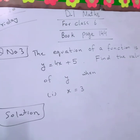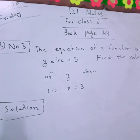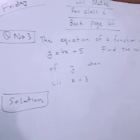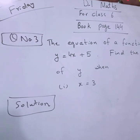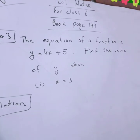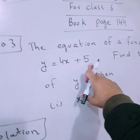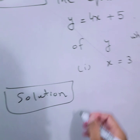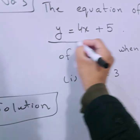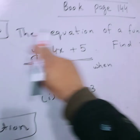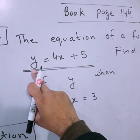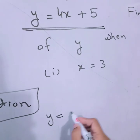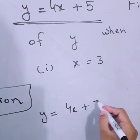This is D1 Maths for class 6, book page 144. If you have not yet opened the book, you can open it. The equation of a function is y equals 4x plus 5. They have already said that this is a function, so y equals 4x plus 5 is our function.